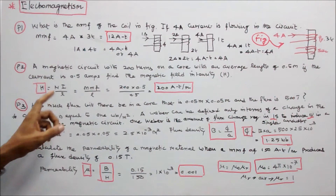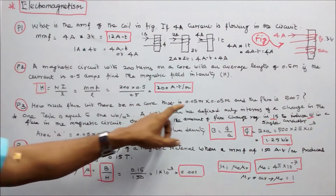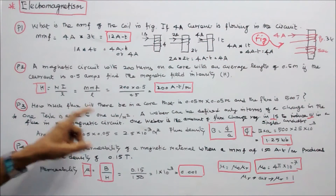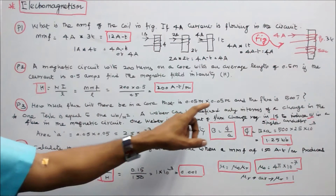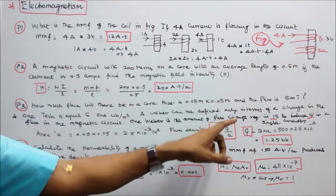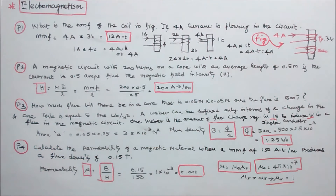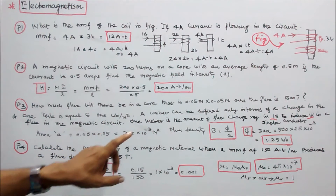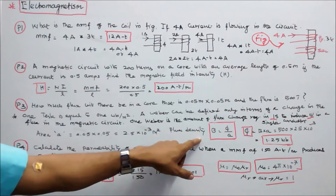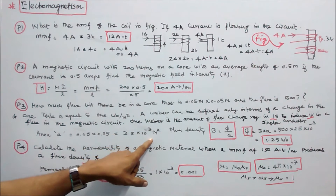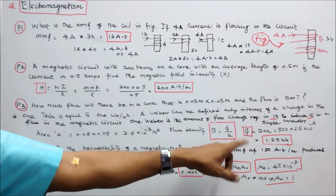Problem number 3. How much flux will there be in a core that is 0.05 meters by 0.05 meters and the flux density is 500 tesla? 1 tesla equals 1 Weber per meter square. Here area — we use small a, as capital A represents amps. Area equals 0.05 into 0.05, which is 2.5 into 10 power minus 3 meter square. Flux density B equals flux (Φ) divided by A, so Φ equals B into A. B is 500, A is 2.5 into 10 power minus 3, giving Φ equal to 1.25 Webers.